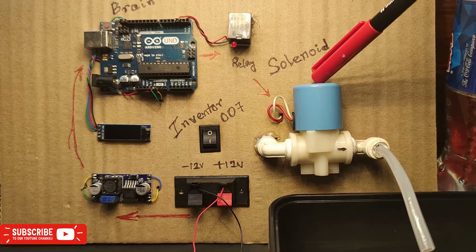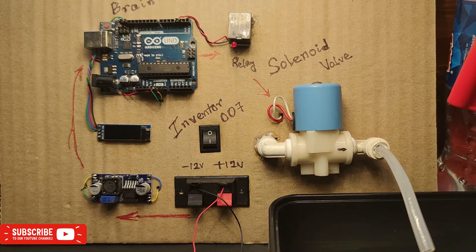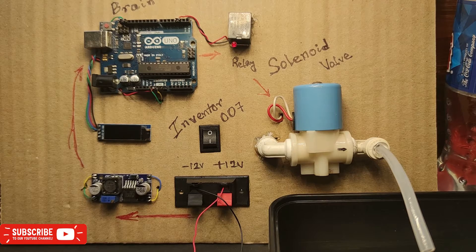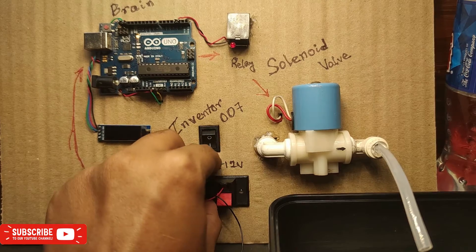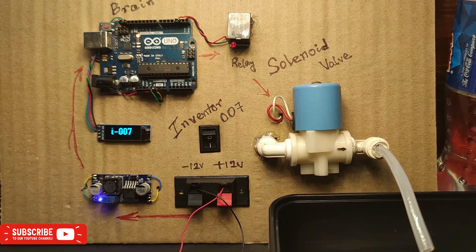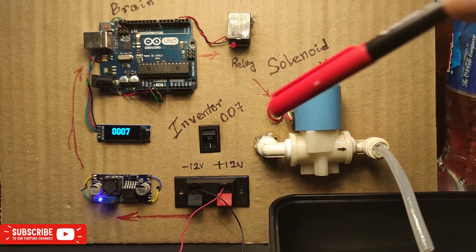So this is a simple system which will be watering every 10 seconds. Let me show you. I put on the switch. Now here the counter will count for 10 seconds and then it will activate the relay, which in turn will activate the solenoid valve.